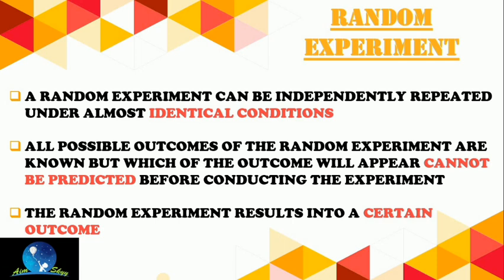All possible outcomes of a random experiment are known, but which outcome will appear cannot be predicted. We know all the outcomes but do not know which one will come when the coin is tossed or the dice is rolled. The experiment will definitely give us an outcome — we will not get a null set. The characteristics of a random experiment are: identical conditions, cannot be predicted, and certain assured outcome.